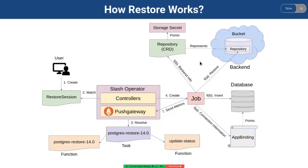Then the job downloads the backup data from the backend and injects it into the destination database. Stash pipes the downloaded data to the respective database tool to inject into the database. Hence, the restore job does not require a large volume to download the entire backup data.